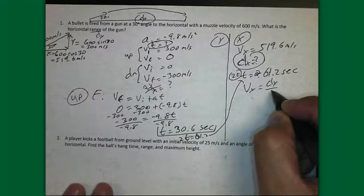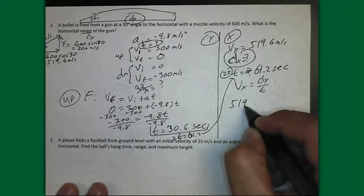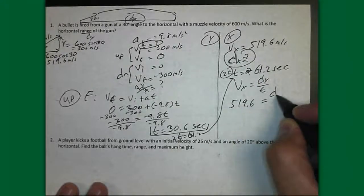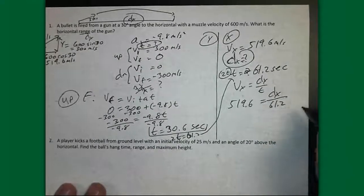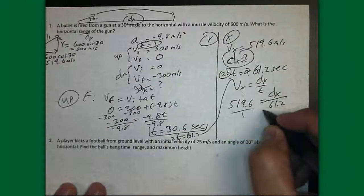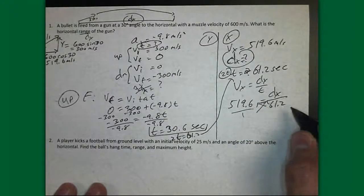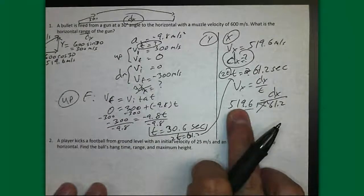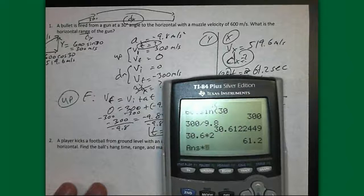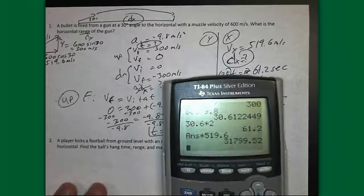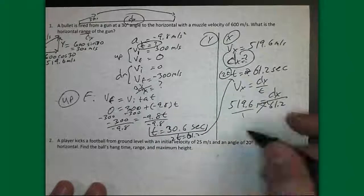VX equals DX over T is our equation. 519.6 equals DX divided by 61.2. We can either cross-multiply or multiply by 61.2 on both sides. It's the same thing. Either way, you end up with 519.6 times 61.2. And we get 31799.5 in meters.